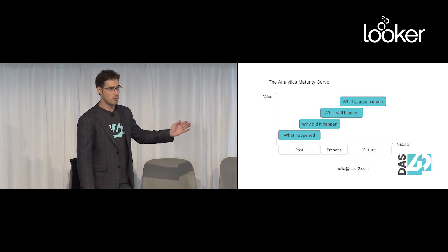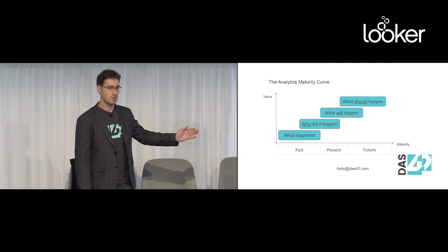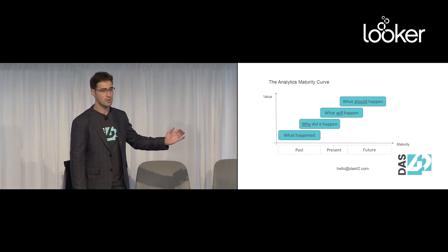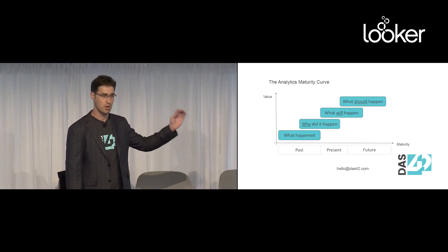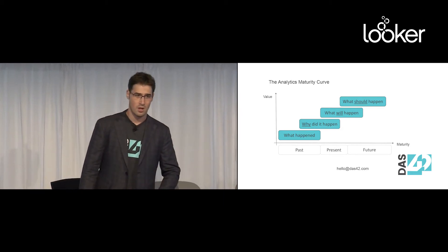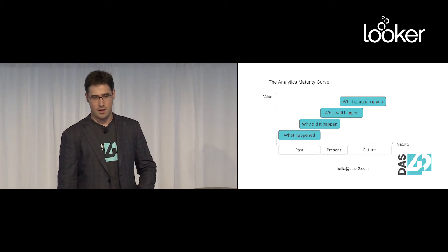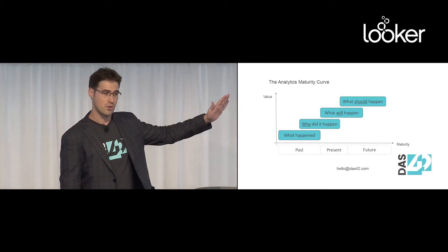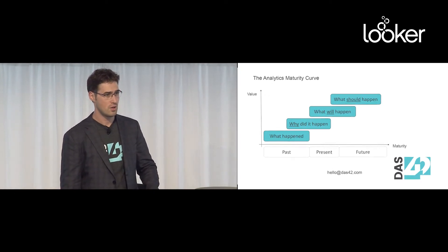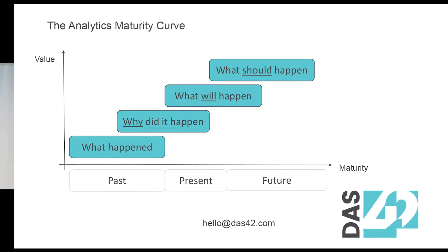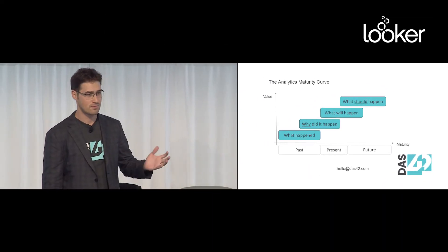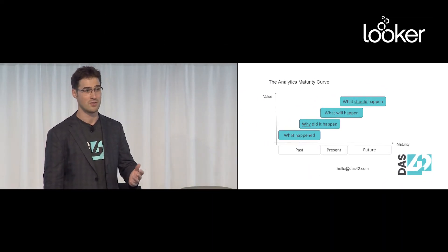In terms of maturity, we can also talk about data quality and data maturity. In the beginning we look at past data, then we get to present data, and then we look at future data, which is the predictive part. The questions we are asking along this growth path are: first, what happened in the past? Then why did it happen? Then what will happen? And what should happen is the last one. These are the common cohorts of questions I think of when I think about these four stages.